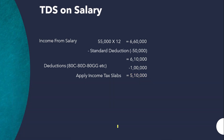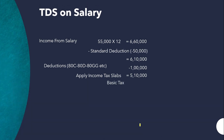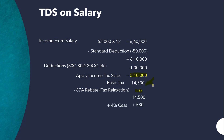The basic tax is ₹14,500. There is a tax rebate under Section 87A, but this rebate can only be claimed when total income is less than ₹5,00,000. Since the income is ₹5,10,000, the rebate of ₹12,500 cannot be claimed. Therefore the basic tax of ₹14,500 stands, and 4% cess is applicable.